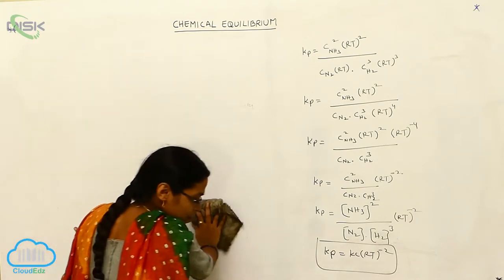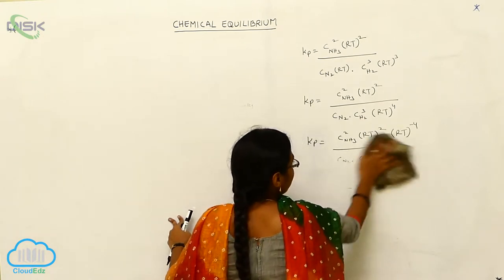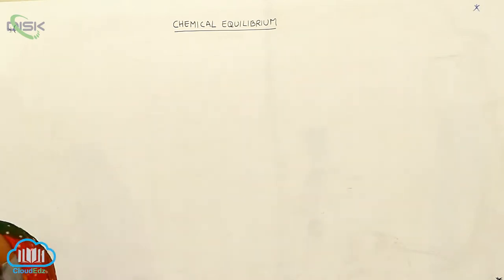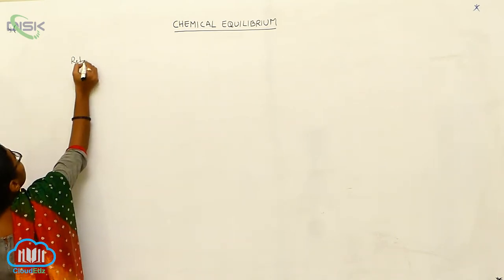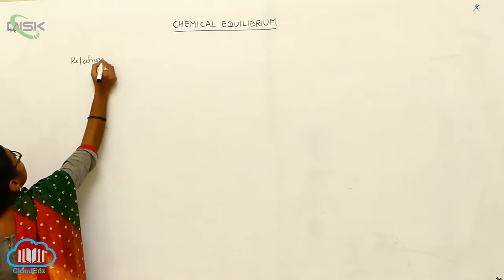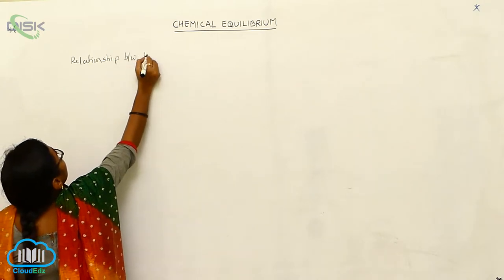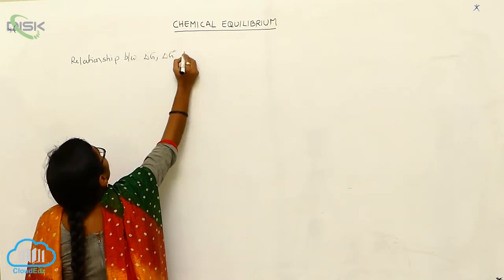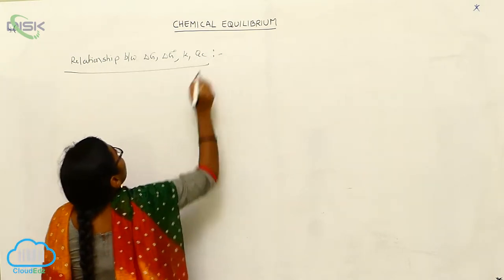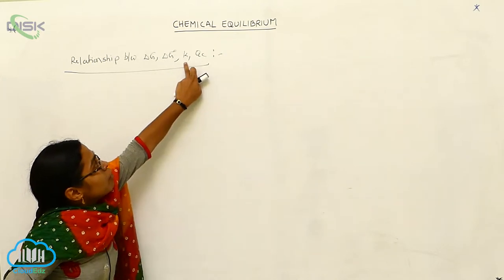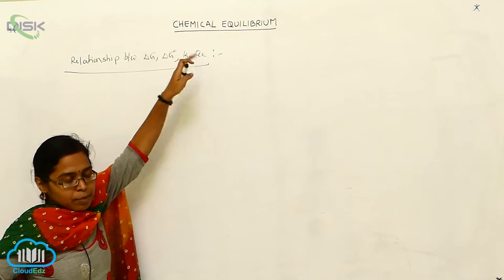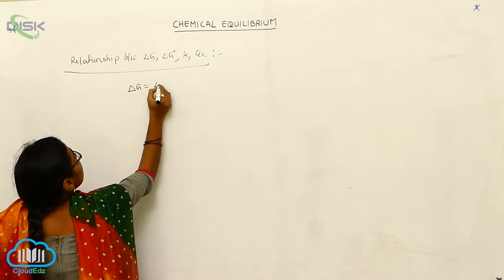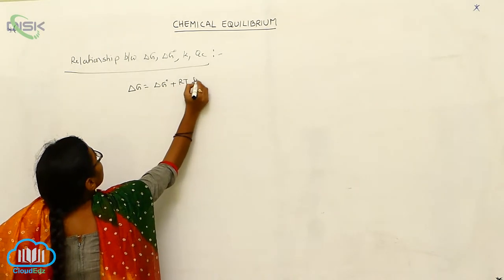Gibbs energy is indicated by G. The relationship we need involves Kp, delta G, delta G naught, K, and Qc — the reaction quotient, which we covered in the previous class. The formula is: delta G is equal to delta G naught plus RT·log Qc.